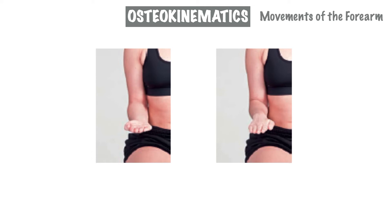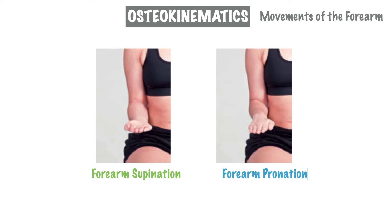Moving on to the osteokinematic movements of the forearm, we have two movements to consider. The first image on your left is forearm supination, performed by holding your arm out in front of you as though someone were handing you something. I like to remember it this way: supination is the position in which you would hold a cup of soup in your hand. Directly to the right is forearm pronation, best demonstrated by moving from a position of supination and then turning or rotating the palm downward.